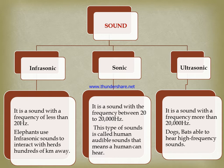In case of sonic sound, it has a frequency of 20 to 20,000 hertz. This type of sound is called the human audible range — that means a human can hear it. In ultrasonic sound, the frequency is more than 20,000 hertz. Dogs and bats are able to hear such high frequency sound.